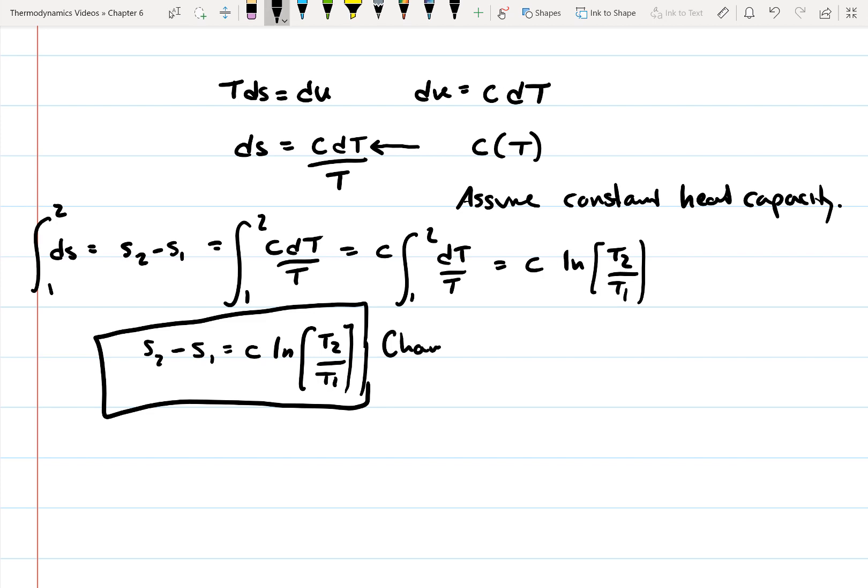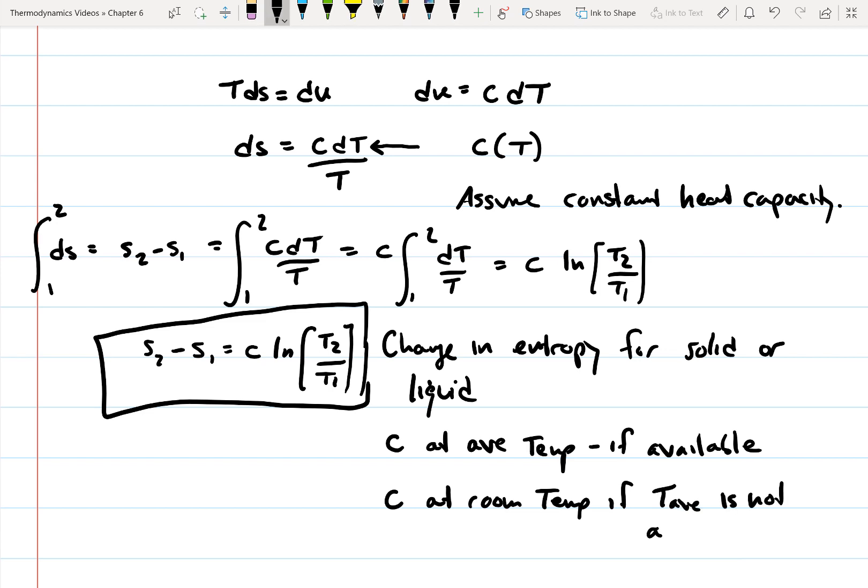Change in entropy for solid or liquid. And you're going to use C at the average temperature, if available. If it's not available, then you'll use it at room temp. So C at room temp, if T average is not available.